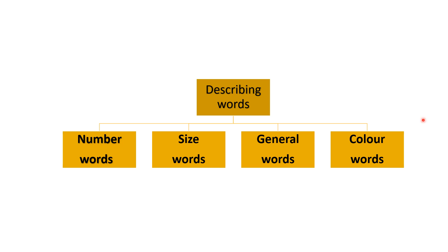There are four types of describing words. The first one is number words. The second one is size words. The third one is general words. And the fourth one is color words. Number words are related to numbers. Size words describe size, like big, small, or huge. General words are quality words — a quality could be good or bad. And color words are color-related words.